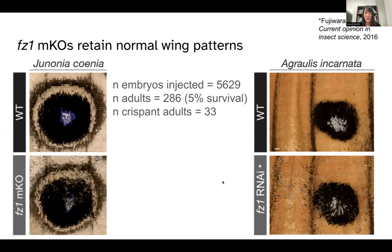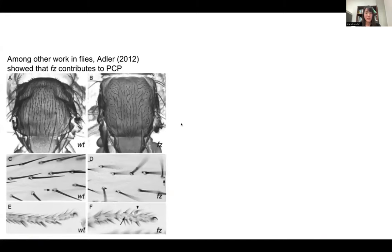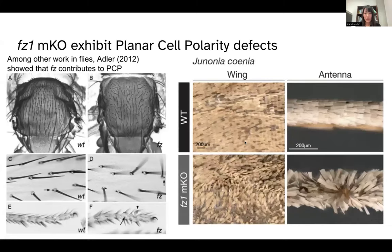We see similar effects in both Fz1 knockouts in Junonia coenia and knockdowns in Agraulis incarnata: a planar cell polarity (PCP) effect where scales point not in one direction but in a chaotic manner. This closely resembles PCP effects in flies, where knocking out Frizzled removes directionality of the bristles on the adult notum and leg. In our case, we see PCP effects not just on the wing but also in the antenna, corroborating the role of Fz1 in controlling PCP in butterflies.